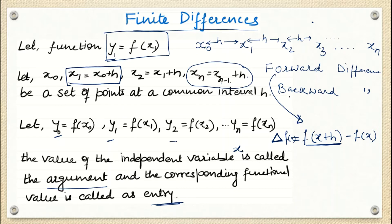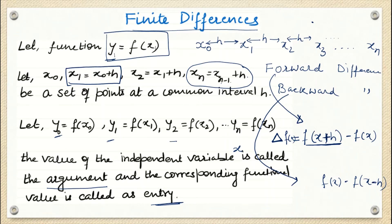Backward difference is just the opposite direction: f(x) minus f(x-h). Here we write f(x-h) because we are going to the negative side. So f(x) minus f(x-h) is the backward difference, which we denote with the upside-down triangle ∇. So ∇f(x) = f(x) - f(x-h). These two formulas are the general formulas for forward and backward differences.